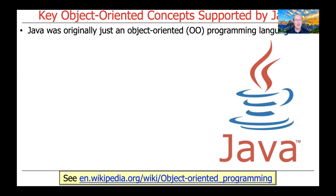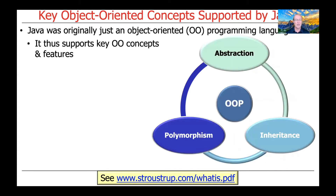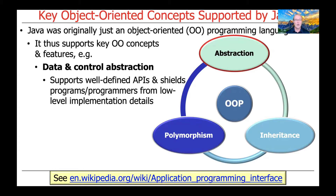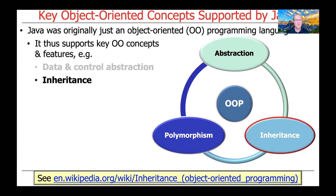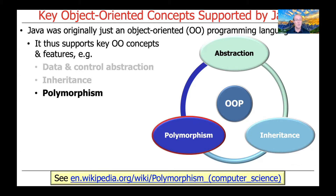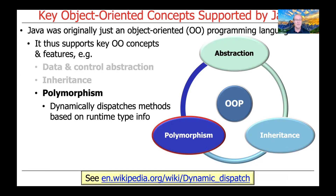Java was originally conceived of and developed as an object-oriented programming language. It therefore supports key object-oriented concepts and features, including data and control abstraction, which supports well-defined application programming interfaces and shields programs and programmers from low-level implementation details. It also supports inheritance, which enables the systematic reuse of existing methods and fields defined in superclasses. And it also supports polymorphism, also commonly known as dynamic binding, which allows the dynamic dispatching of methods based on runtime type information.